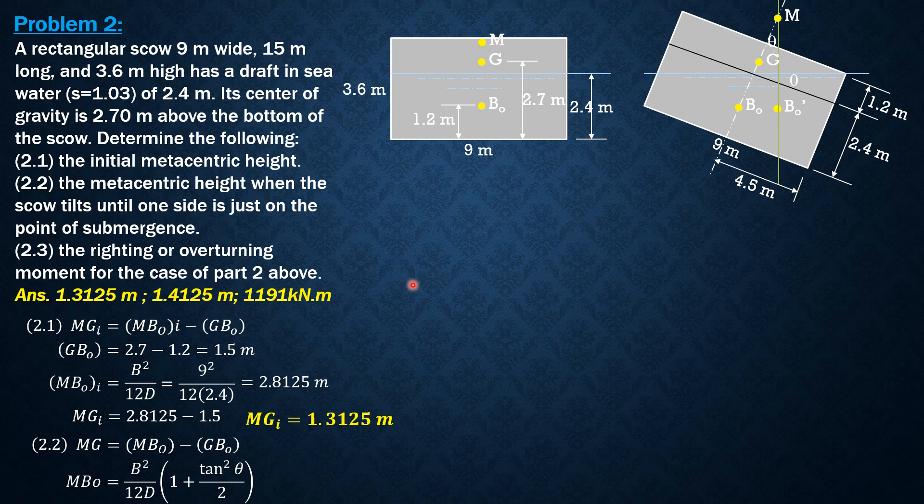MB₀ this time is (B²/12D) times (1 + tan²θ/2), so MB₀ is 2.9125 meters. From the figure, tan θ is 1.2/4.5, which reduces to 4/15, or the angle theta in degrees is 14.93 degrees.